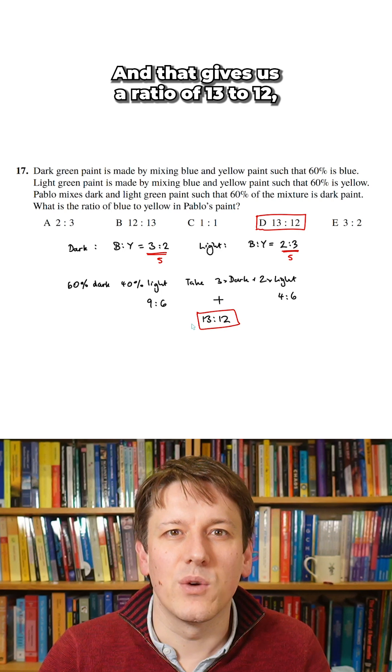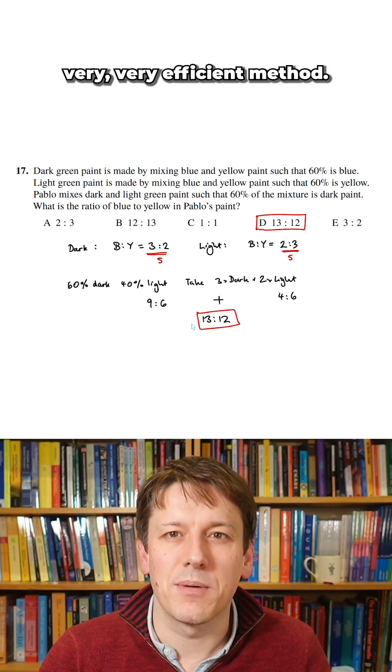And that gives us a ratio of 13 to 12, which is the answer here, which is D for a very efficient method.